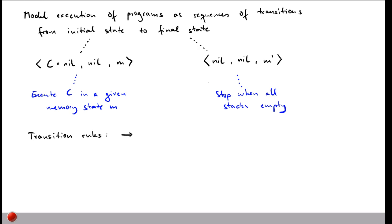These rules are denoted with an arrow and tell us how to get from one triple (C, R, M) to another with an updated control stack, result stack, and memory. I'll now define transition rules for all parts of our SIMP language, starting with the simplest element — arithmetic expressions — and specifically how to evaluate expressions.